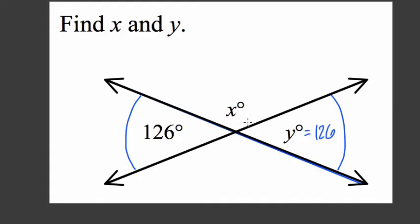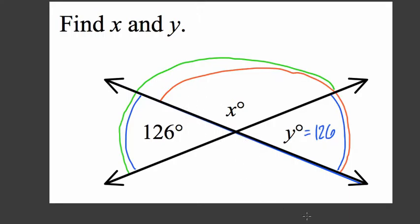Now both of them are supplementary to angle x. For example, if I add this angle to x, I get 180 degrees. If I add 126 to x, I also get 180 degrees. That's part of the reason that vertical angles must be equal to each other.